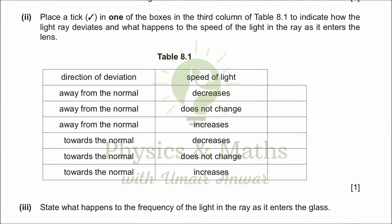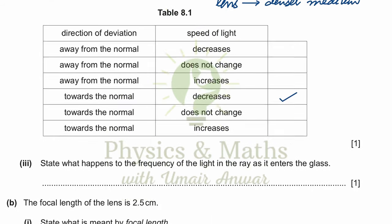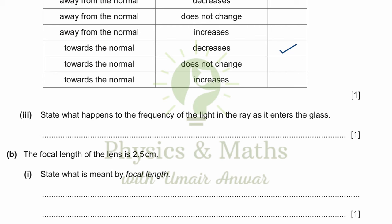Place a tick in one of the boxes in the third column of table 8.1 to indicate how the light ray deviates and what happens to the speed of light as it enters the lens. Since it is entering a denser medium — the lens is an optically denser medium — the speed is going to decrease and it would bend towards the normal. With the options of speed decreases, does not change, or increases, we place a tick on 'speed decreases'. The frequency of the light in the ray as it enters the glass — there is no change in the frequency; it stays constant.